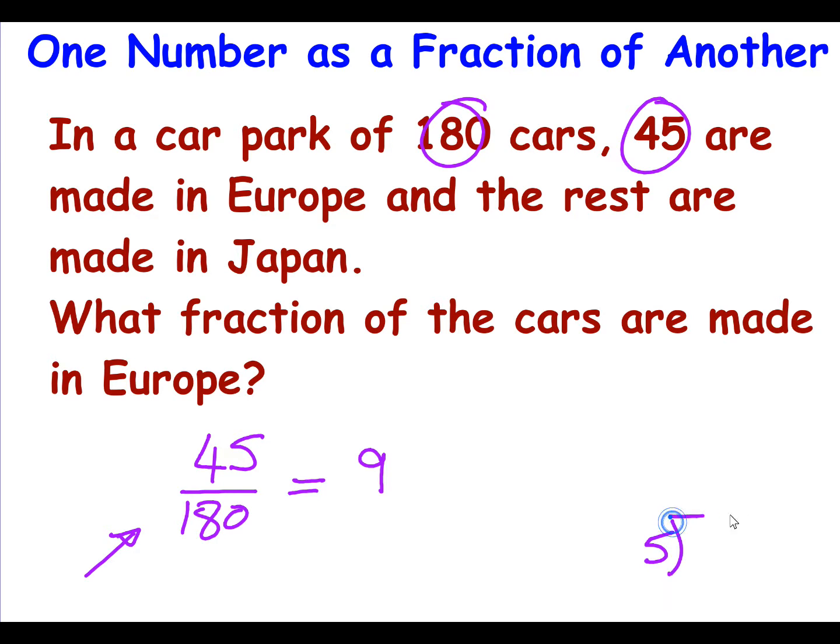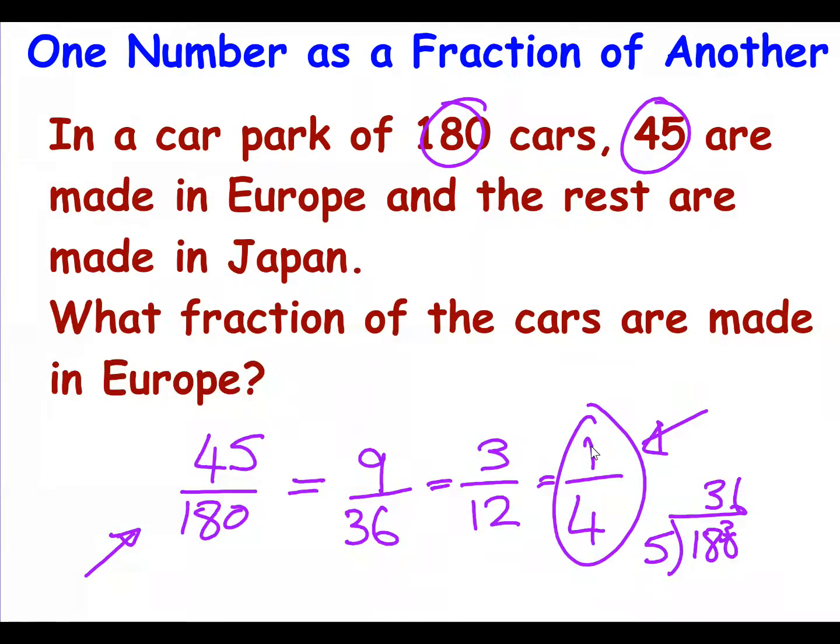So I know 5 goes into 45 nine times. But how many times does 5 go into 180? Well 5 doesn't go into 1 but 5 goes into 18 three times, and that's a remainder of 3. And 5 goes into 30 six times. So you end up with 9 over 36. Again I can see that both are divisible by 3. So I end up with 3 over 12. And if I simplify it again because both are divisible by 3, I end up with 1 quarter. So in its simplest form it's 1 quarter. Now notice you can take as many steps as you like to get to this simplest form. It really doesn't matter. So what fraction of the cars are made in Europe? It's 1 quarter.